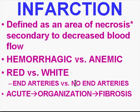Red infarcts occur in vessels that have collateral circulation, while white infarcts occur in end arteries. Like blood clots, infarcts have a progression of tissue changes: acute being hours to days, organizing being days to weeks, and fibrosis being weeks to months to years. As time goes on, there's an ingrowth of blood vessels, macrophages, and early fibroblasts, giving a yellow appearance that is eventually replaced by a denser fibrotic scar.